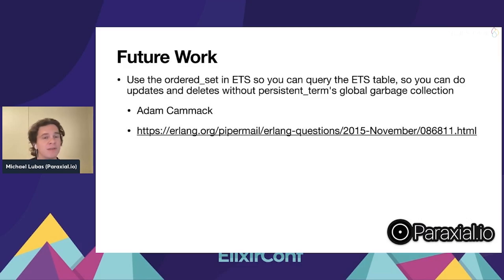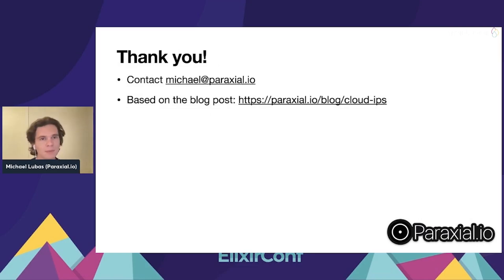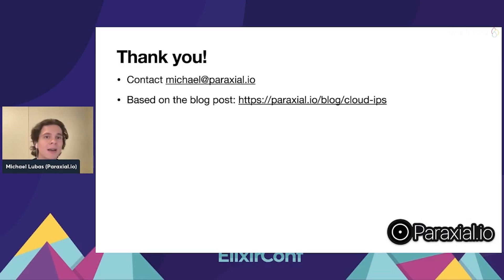Some conclusions: make sure you look at the data structure you're using and see if it fits. Gen server can become a bottleneck; ETS will copy non-binary data to the calling process, so watch for memory spikes; persistent term is ideal for data accessed by many processes as long as it won't be frequently updated. There's also an Erlang mailing list post about using ETS ordered sets for CIDR prefixes that could support updates. That's the conclusion — the talk is based on a blog post at Praxel.io. Thank you all for coming.